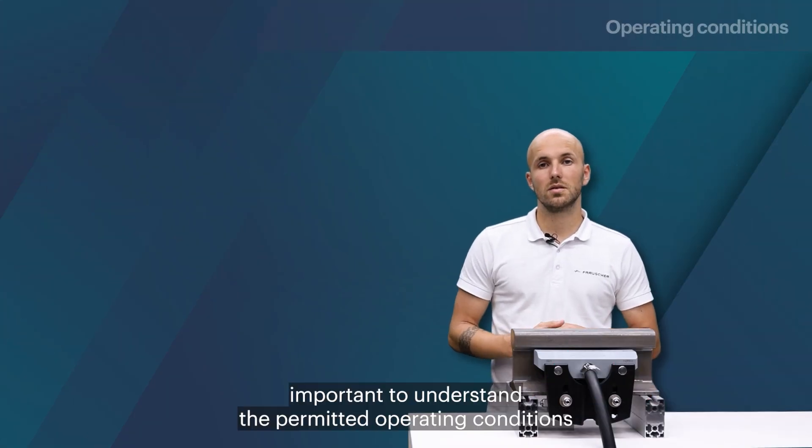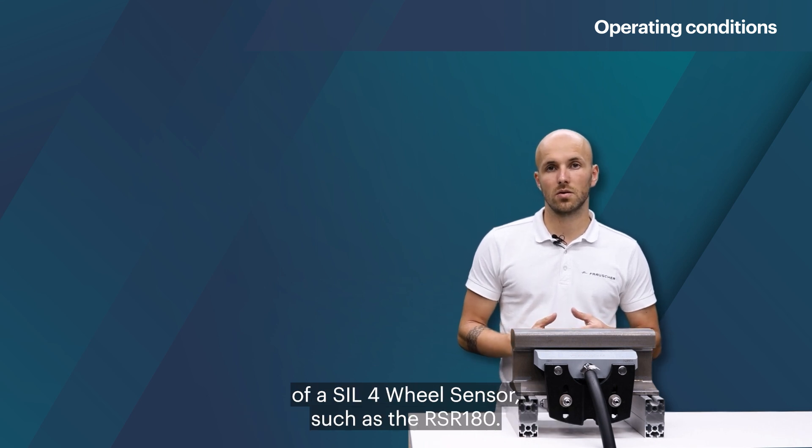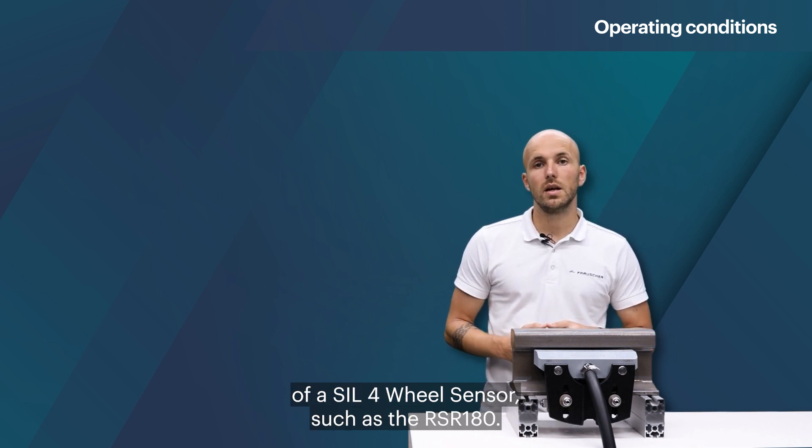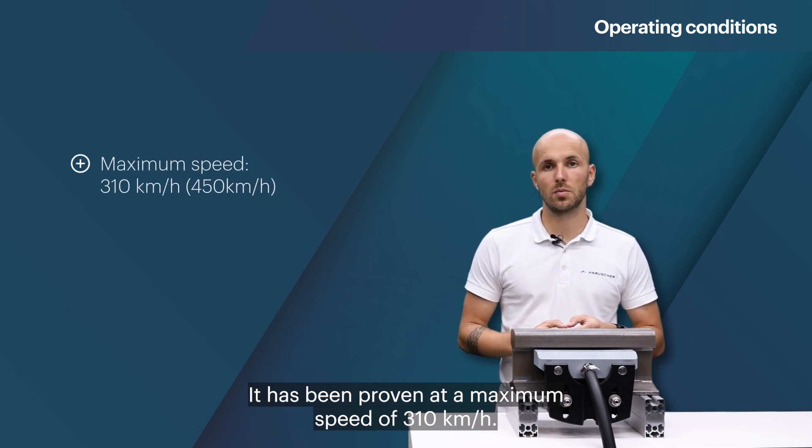It is very important to understand the permitted operating conditions of a SIL 4 wheel sensor such as the RSR 180. It has been proven at a maximum speed of 310 kilometers per hour.